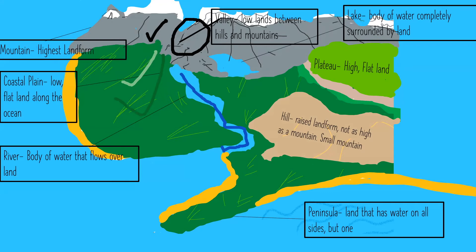You might see little ducks and fish in a lake. Next, plateau: high, flat land. As you can see, it's higher than the ground level, so keep that in mind. Then we have a hill: a raised landform, not as high as a mountain.